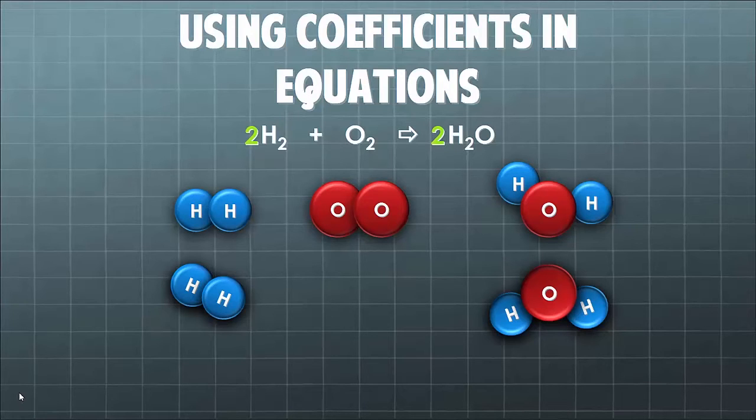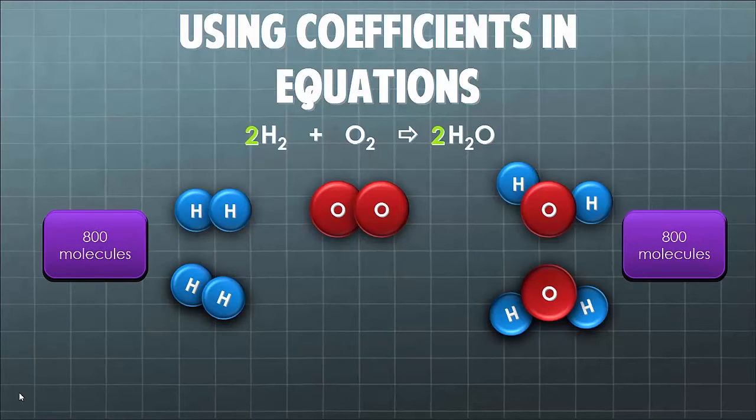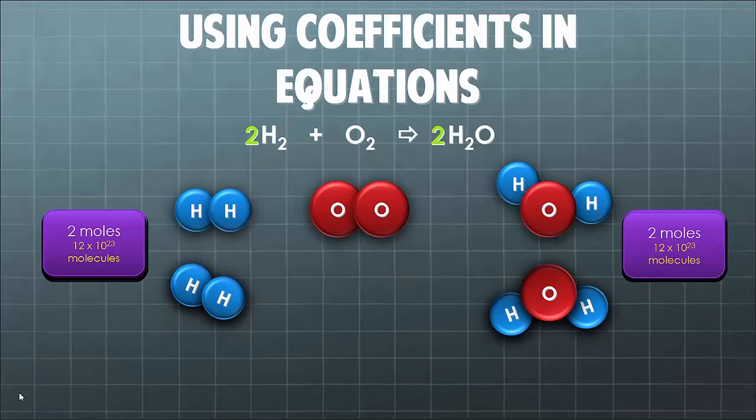We can say two molecules of hydrogen will make two molecules of water, but we can also say for every 100 or 800 molecules of hydrogen, you'll get 800 molecules of water. And most importantly and perhaps most usefully, for every two moles of hydrogen, you're going to get two moles of water. That's 12 times 10 to the 23 molecules.